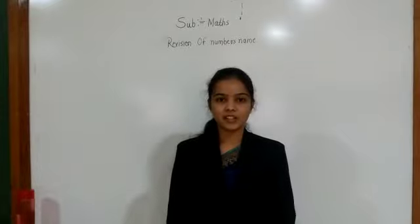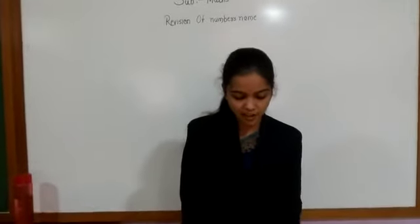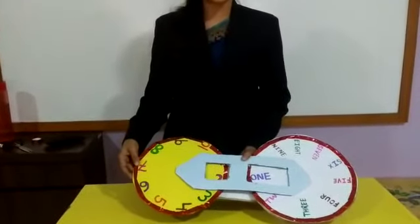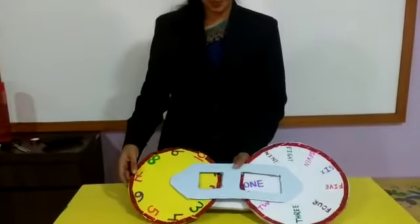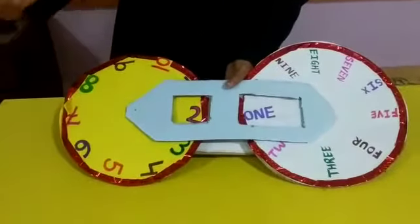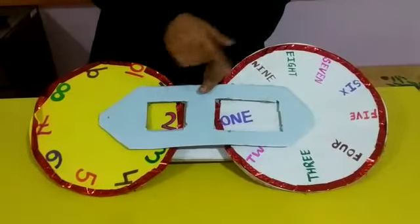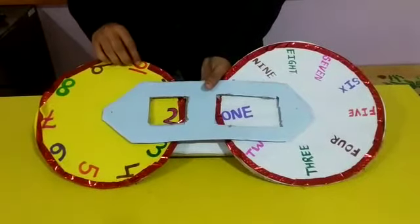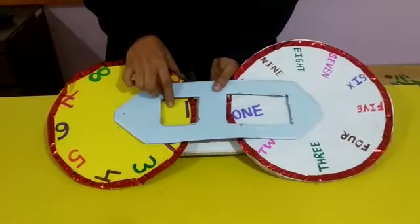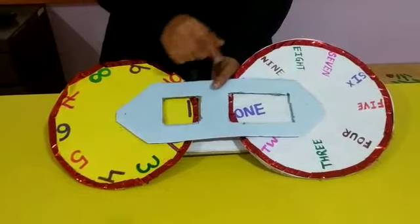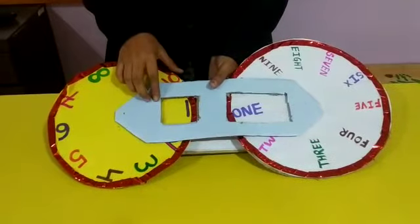For this revision, see what is this? Yes, this is one magic for you. I will show you. See, here are the numbers. And on this side, the spelling of that number. What we will do? See, this is number 1. And we are going to recognize the spelling of number 1.